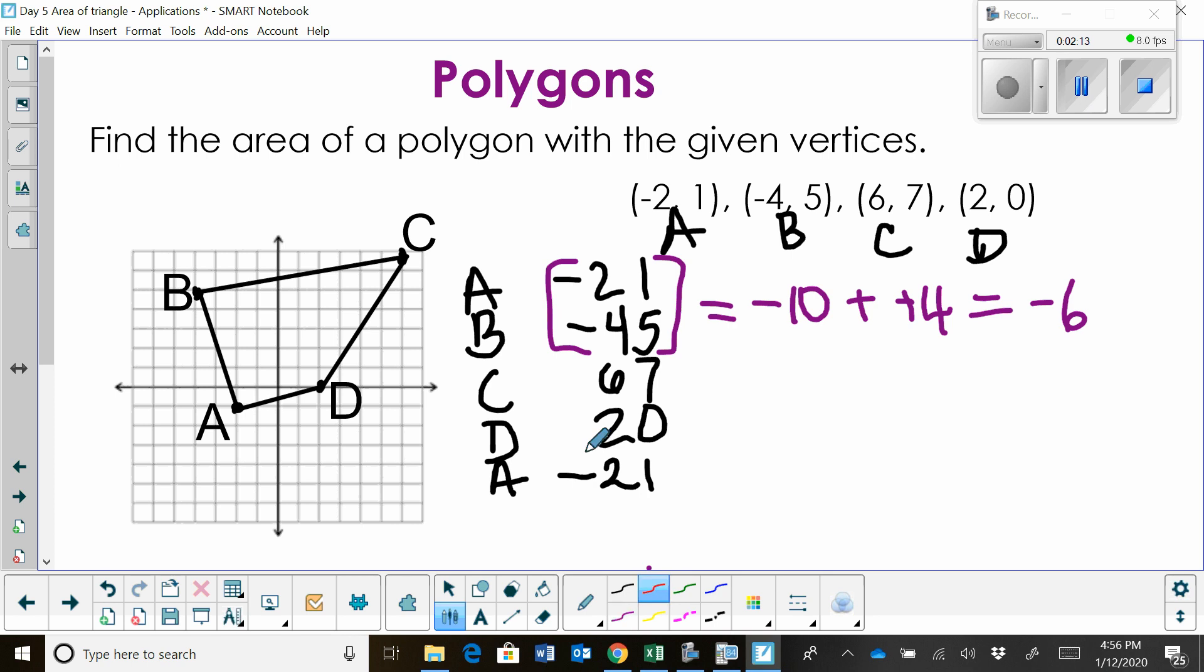Then I'm going to pair up the next two. I'm going to pair up B and C as a second 2x2 determinant, and then I find the determinant of that one. So it's negative 28 minus 30, so that gives me negative 58.